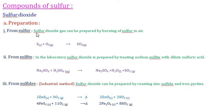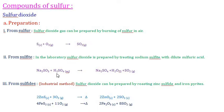First method — from sulfur: sulfur dioxide gas can be prepared by burning sulfur in air; sulfur reacts with oxygen to form sulfur dioxide. Second method — from sulfite: when sodium sulfite reacts with concentrated sulfuric acid, it forms sodium sulfate and water, with the elimination of sulfur dioxide.